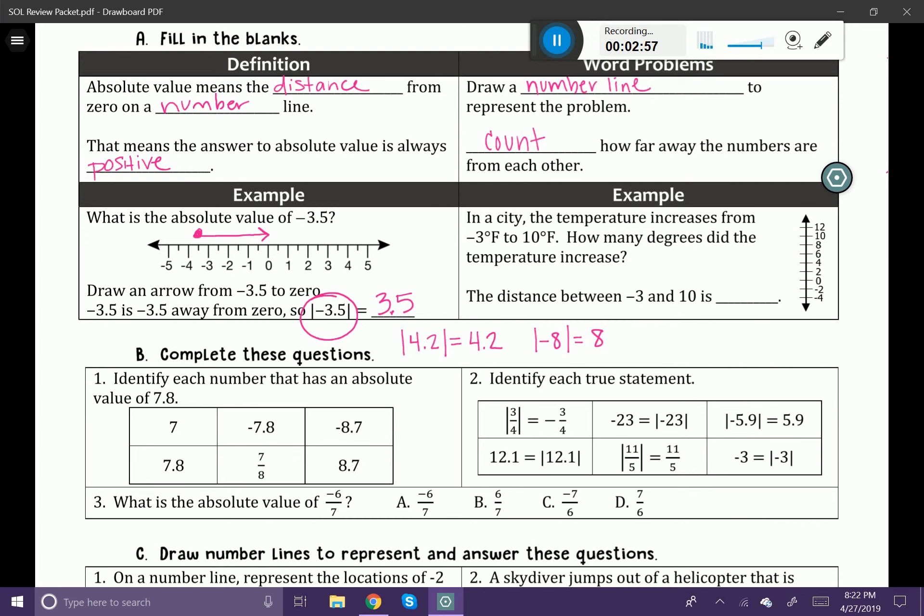So if we look over here, the first thing we're going to do is draw a number line. You can see that I have a vertical number line here over on the right. I can also represent this by a horizontal number line if I choose. So my negative 3 is going to be about right here. And I see that 10 is also on my number line. So I want to know what the distance is between these two numbers.